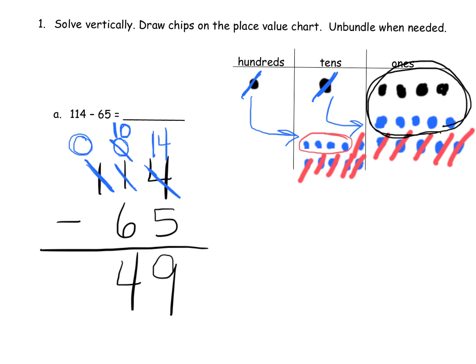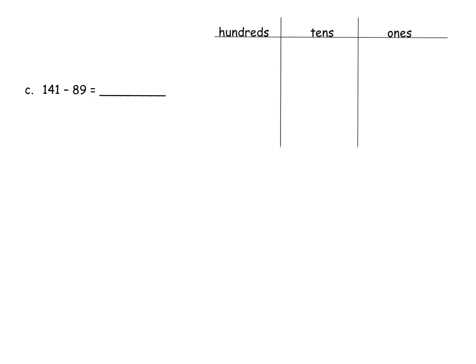This is what the students' paper should look like — we should see the standard algorithm and we should see some recorded thinking using the number disks. It's up to you as the teacher or parent whether they do the standard algorithm first, the number disks first, or do them in parallel. All right, let's do one more practice.